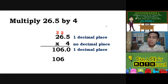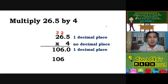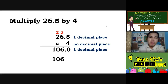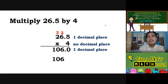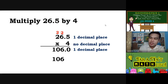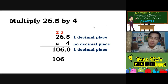Pag pera naman yan, walang problema kahit maglagay ka ng point zero zero. But since we are talking of a whole number, not money, when you get a product of point zero, zero, zero — it means the final answer should be a whole number.